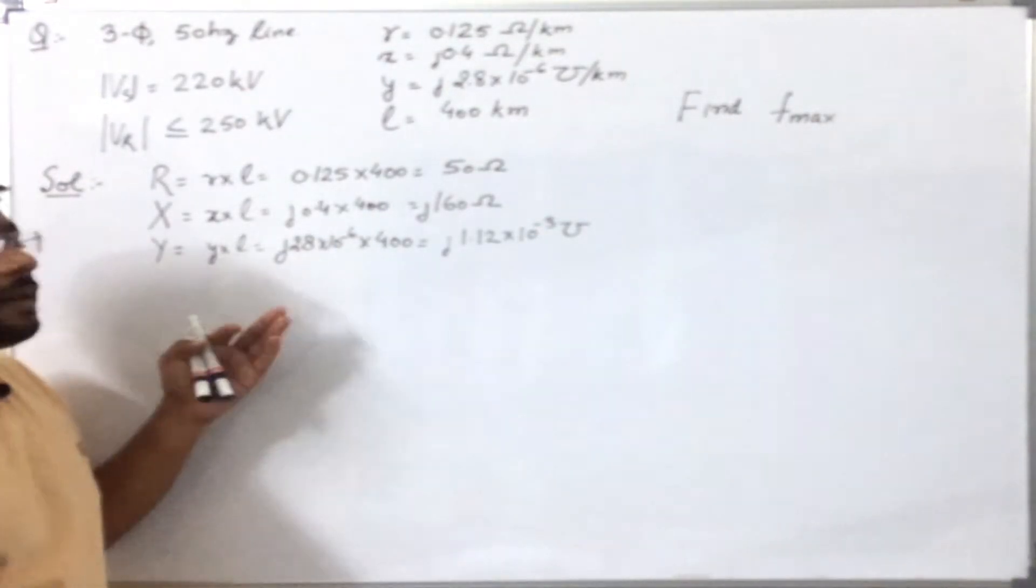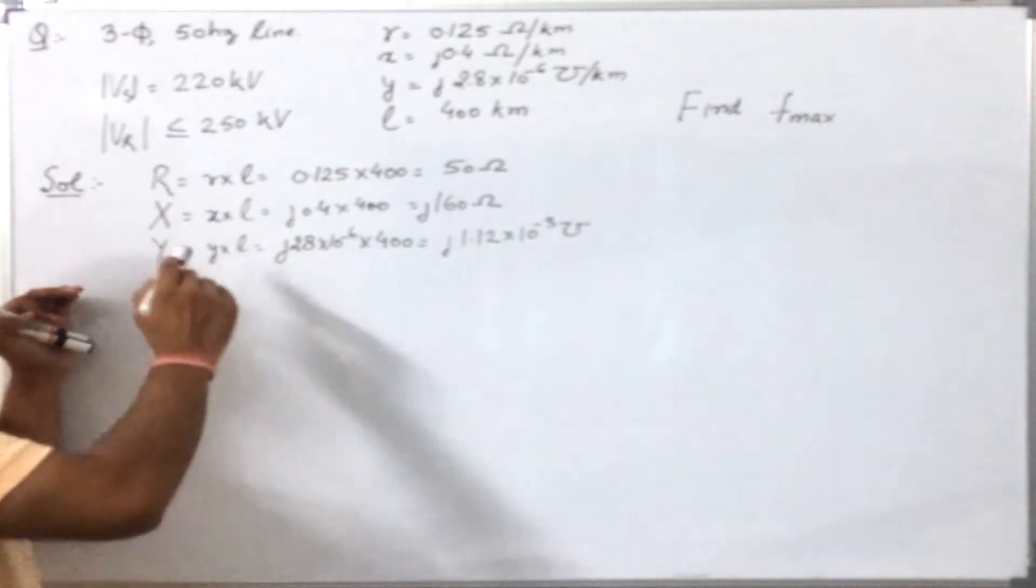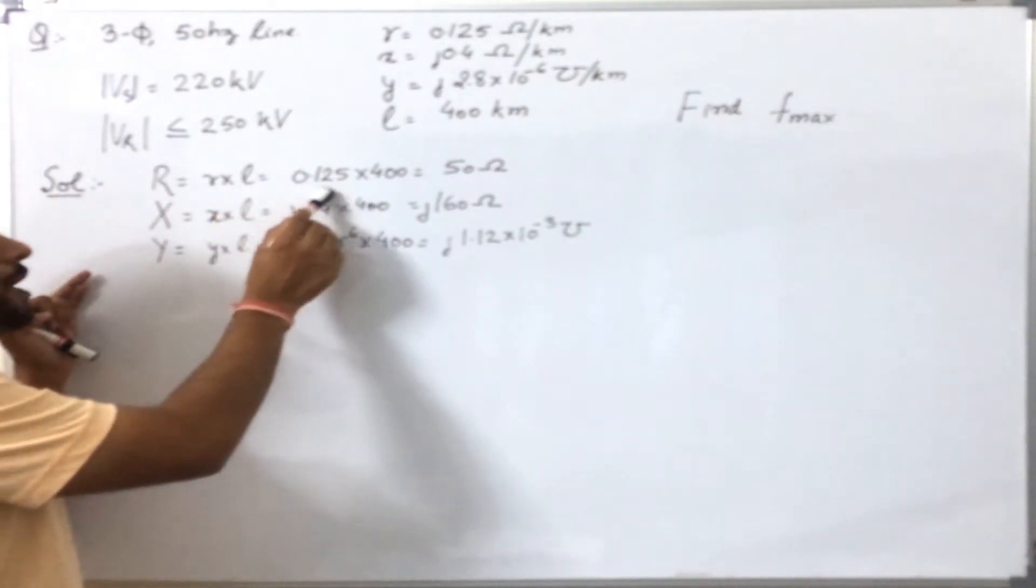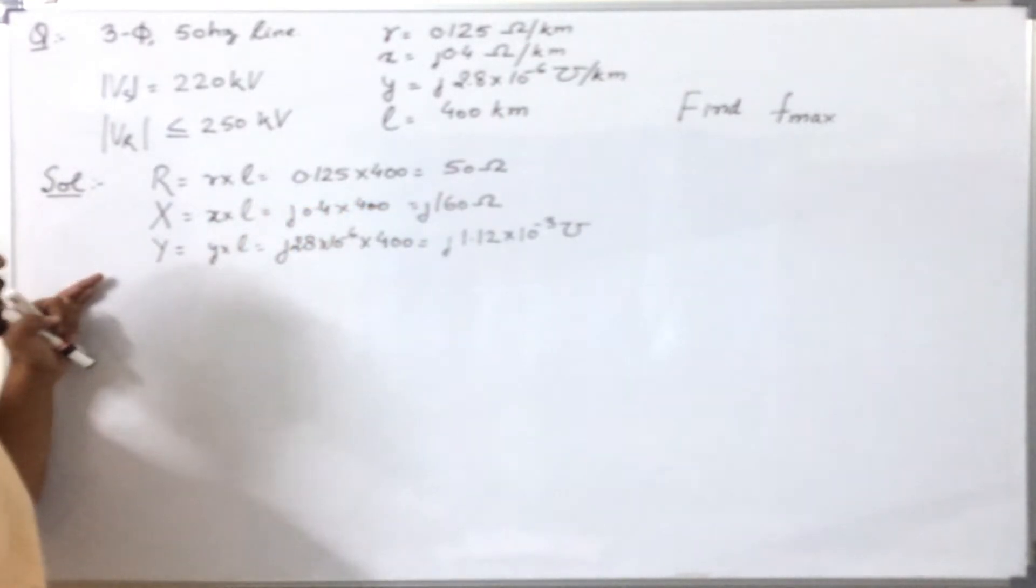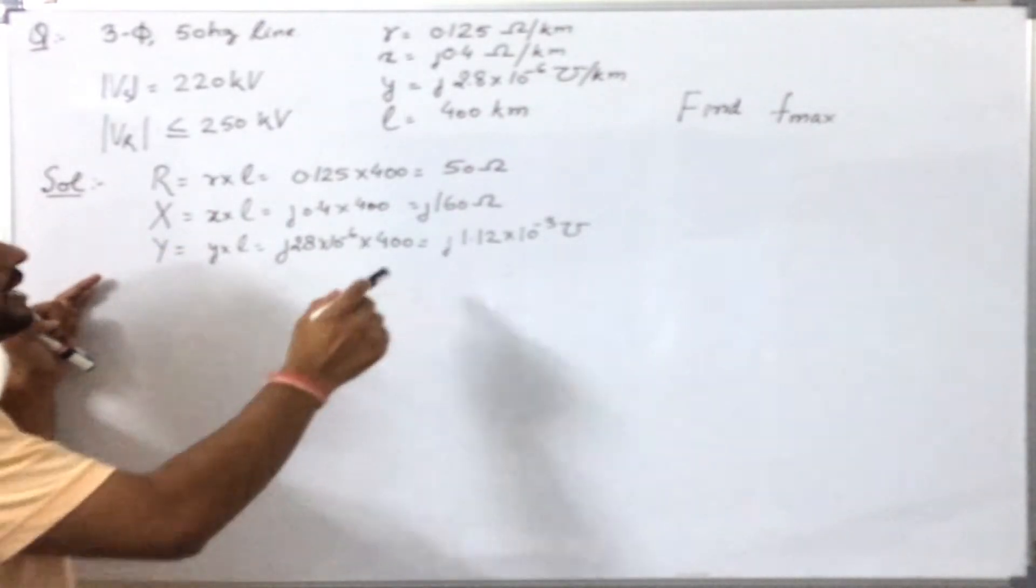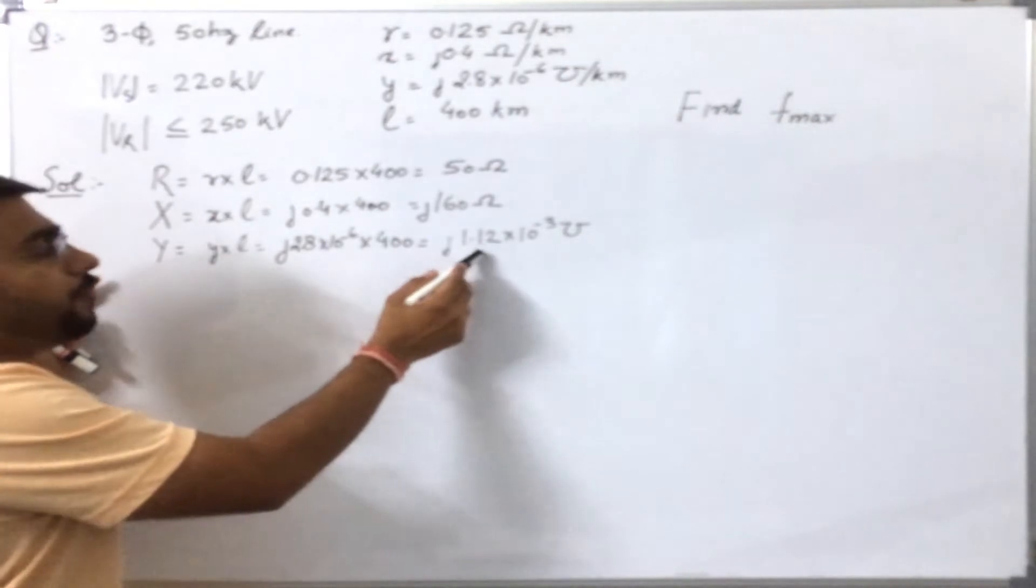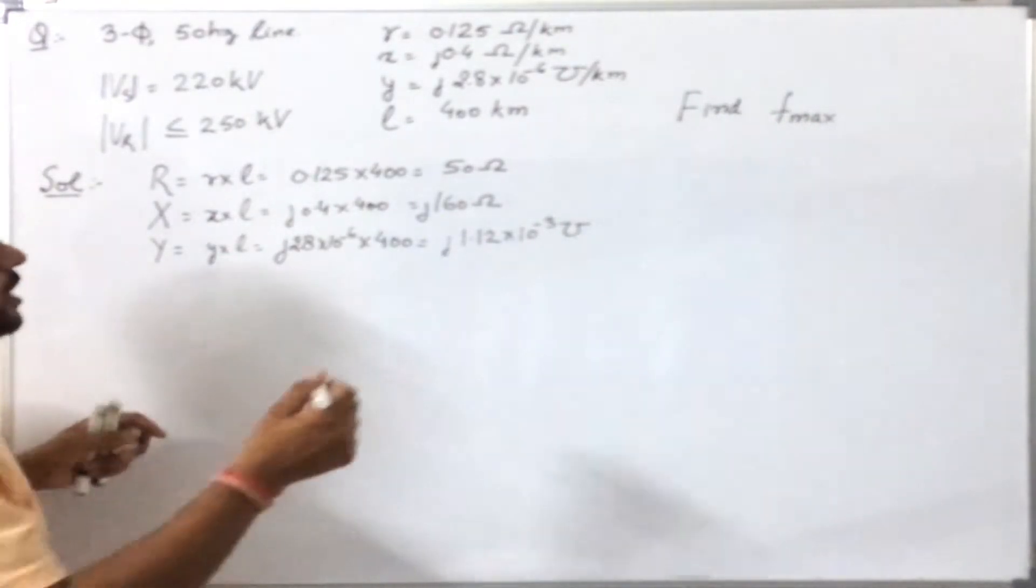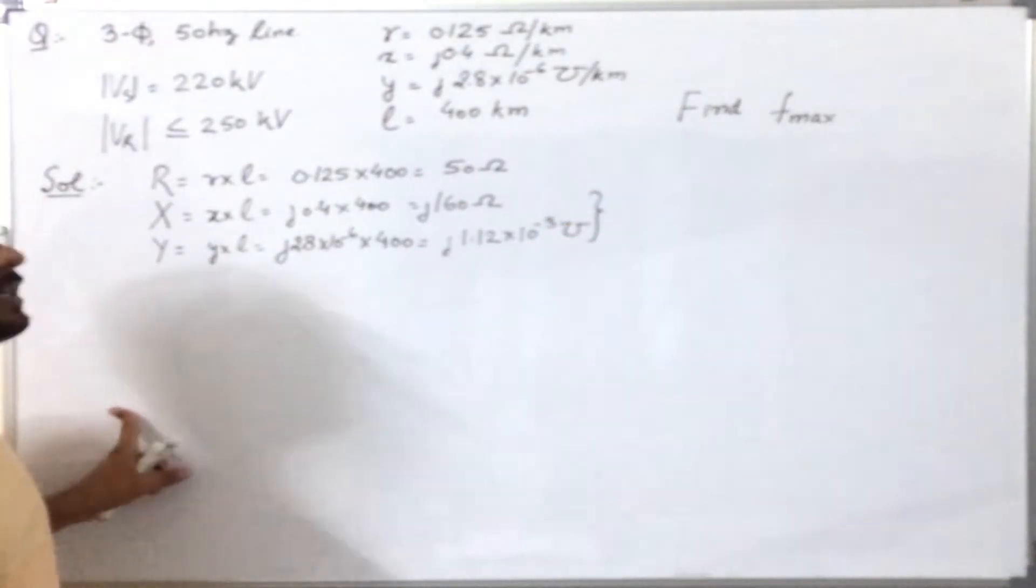Before proceeding further, let us find the total parameters of the line. The total resistance will be resistance per unit length times the length of the line, which is 0.125 times 400 equals 50 ohm. Similarly, the reactance will be 160 ohm. Shunt admittance will be 1.2 times 10 to power minus 3 mho. Now these two values depend upon frequency, and this resistance is independent of frequency.